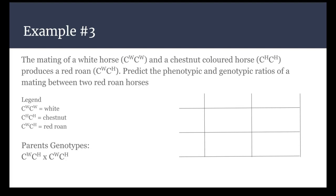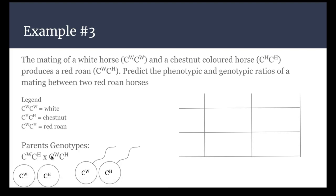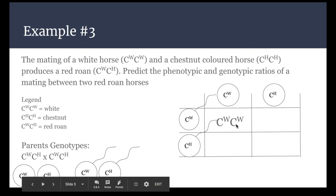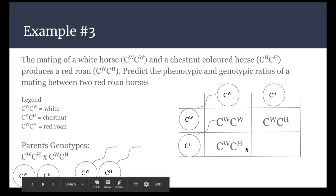So my genotypes - I'm crossing two red roan horses, so they have a combination of the W and the H. My gametes look like this: W H W H. And I'm going to put them into my Punnett square, and when I do the cross I end up with two of the CWs. I end up with one CW and one CH. I end up with another CW and another CH, and my last one is a CH CH.